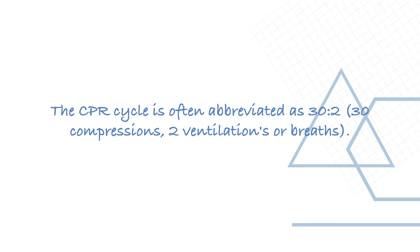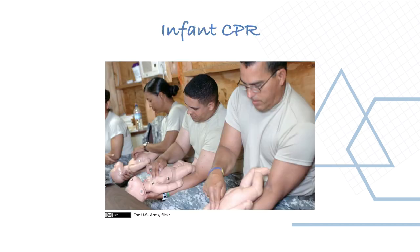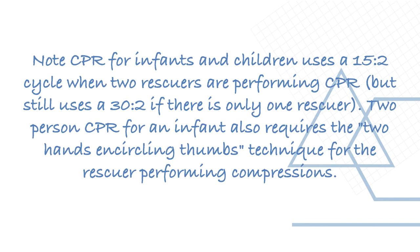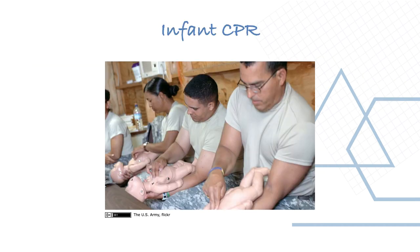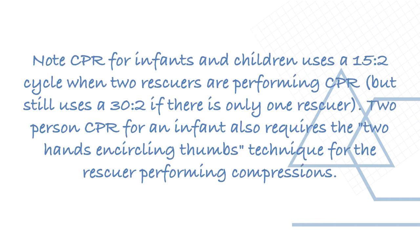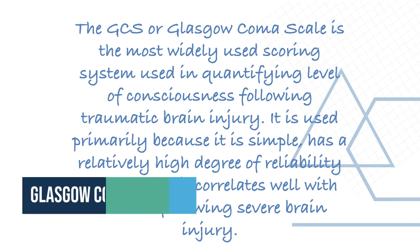The CPR cycle is often abbreviated as 30:2 — 30 compressions to 2 ventilations. Infant CPR is different: CPR for infants and children uses a 15:2 cycle when two rescuers are performing CPR, but still uses 30:2 if there is only one rescuer. Two-person CPR for an infant also requires the two-hands encircling thumbs technique for the rescuer performing compressions.